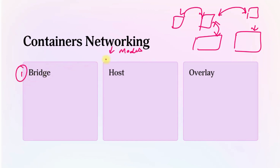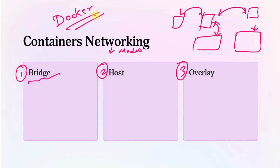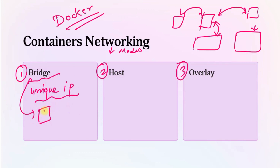The first mode is bridge, which is the default networking mode in Docker. In this mode, each container is assigned a unique IP address that helps it communicate with other containers on the same bridge network. If containers are on the same bridge network, they can communicate with each other by default.